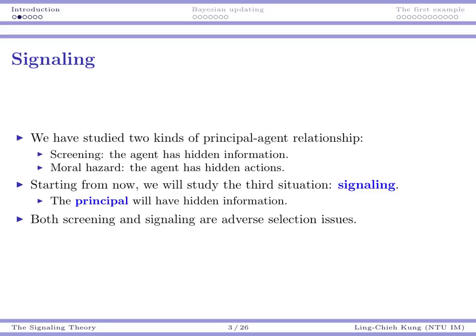There are different kinds of principal-agent problems. One of them is a screening problem, and the other is the moral hazard problem. In both cases the principal is at some informational disadvantage because the agent has some private information. For the screening problem the agent has hidden information; for the moral hazard problem the agent has hidden actions. These are the two types of problems we have studied.